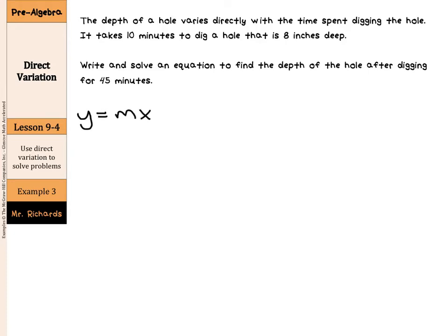One thing that is important to know here is that Y varies directly with X. So, when you are given a word problem such as the depth of the hole varies directly with the time spent, we can use the idea that Y varies directly with X to help us identify the variables. So, the depth of the hole varies directly with time. So, when we say Y equals MX, we want to solve for M.